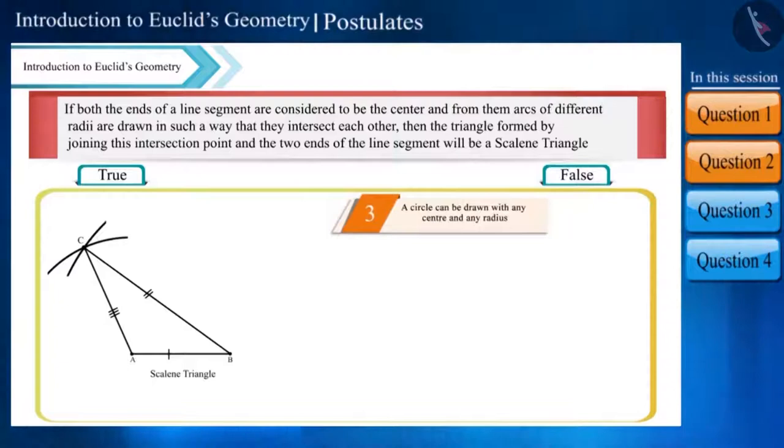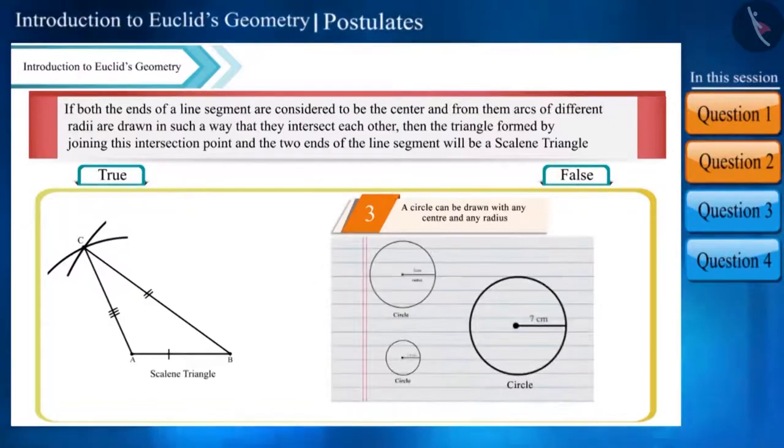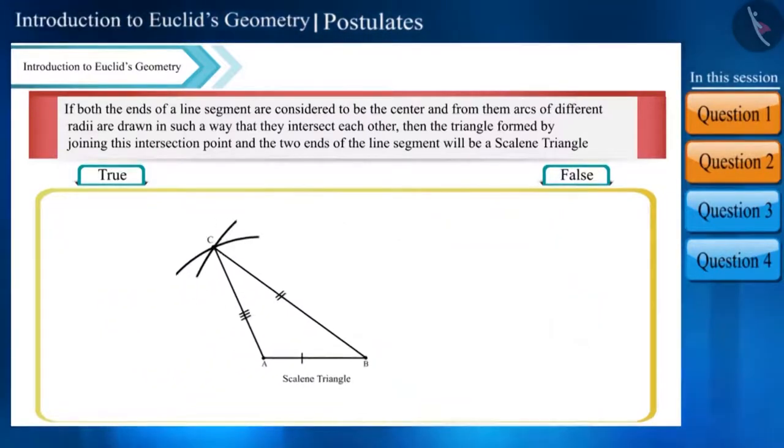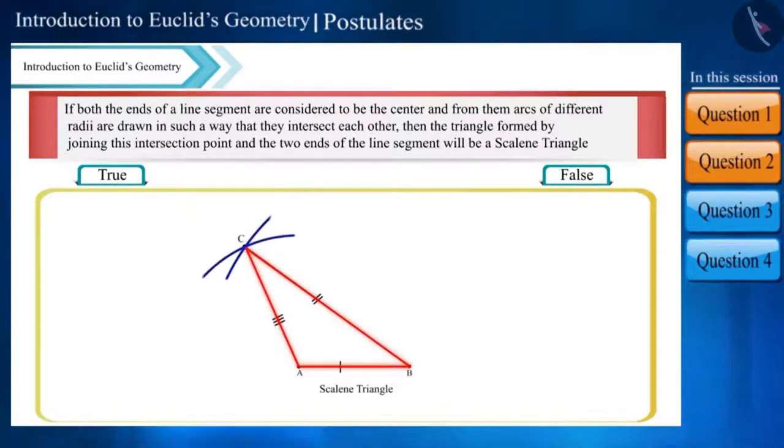Friends, according to the third postulate of Euclid, a circle made with the same radius but with different centers is equal. This means circles with different radii will not be equal. So when we draw arcs with different radii, both the lengths are different, and since the three lengths are different, the triangle formed will be a scalene triangle. Therefore this statement is true.